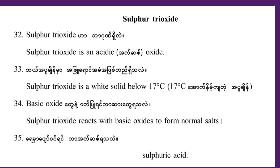Sulfur trioxide is a white solid below 70 degrees Celsius. Above 70 degrees Celsius, sulfur trioxide is a solid stick. Sulfur trioxide reacts with basic oxides to form normal salts.